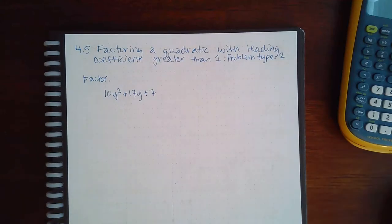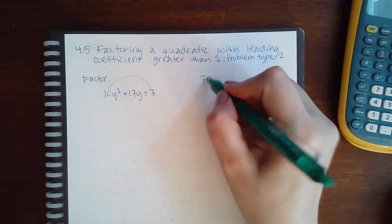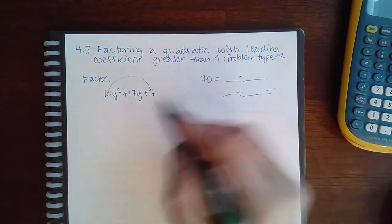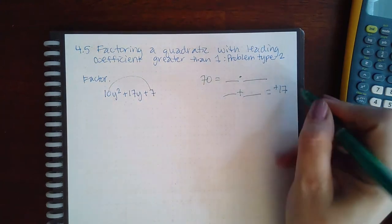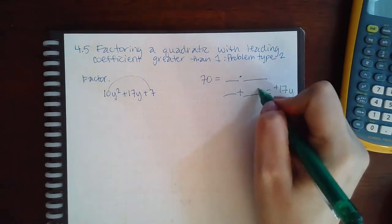So here we are, 4.5 factoring a quadratic with leading coefficient greater than one, problem type two, doing the same thing as before. So I get 70. What multiplies to give me 70 but adds to give me the middle guy, positive 17? And I'm going to put the y there.